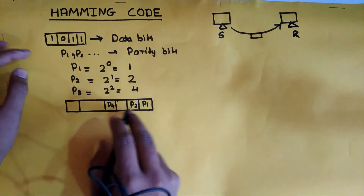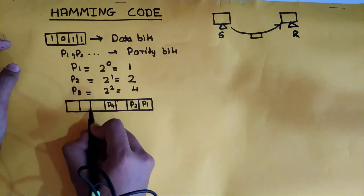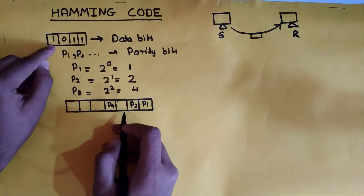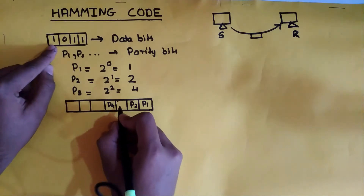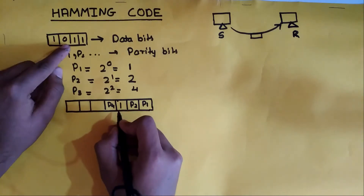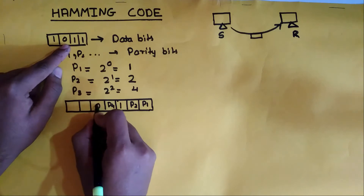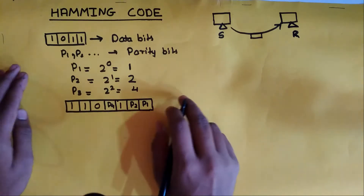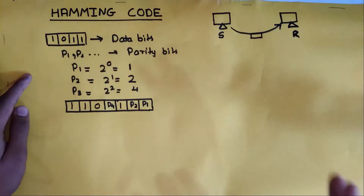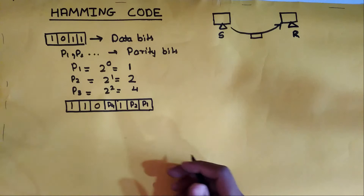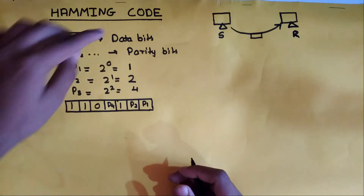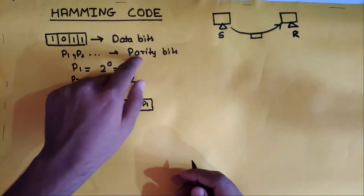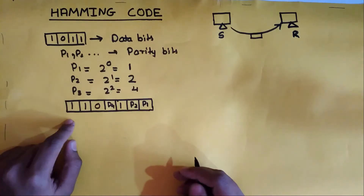The remaining positions are taken by the data bits: the first data bit is 1, second is 0, third is 1, and fourth is 1. Thus the whole code consists of 7 bits — 4 data bits and 3 parity bits.